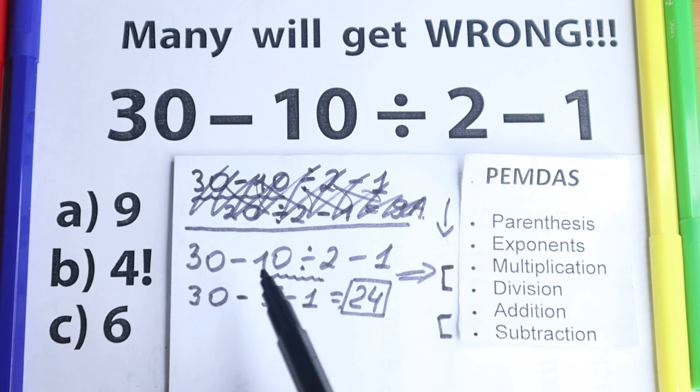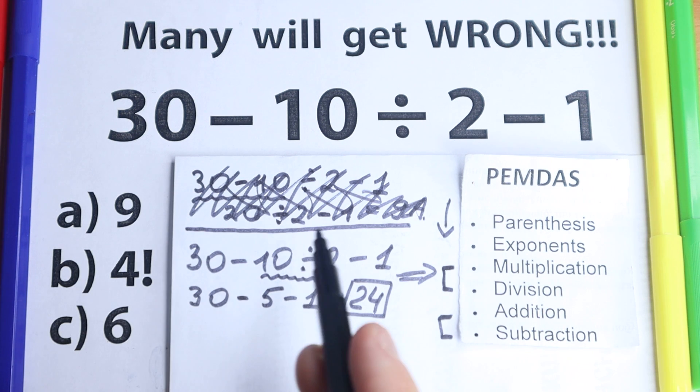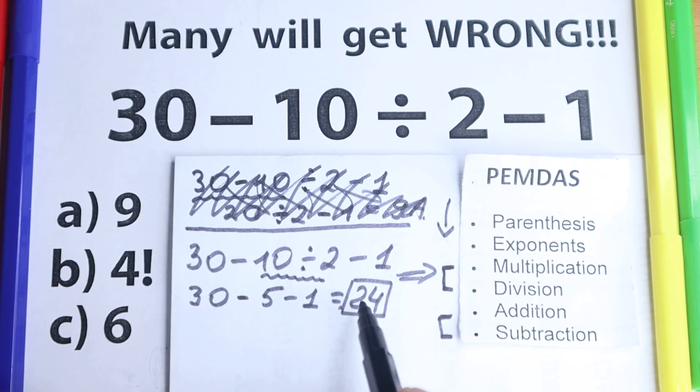But what about the correct option right here? We have option A, option B, option C. Option A is 9, this is not the same as 24. Option C is 6, this is not the same. But what about this 4 factorial?